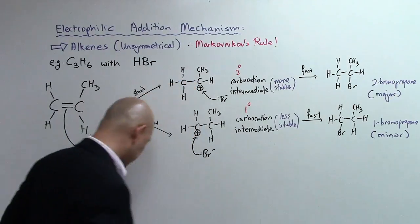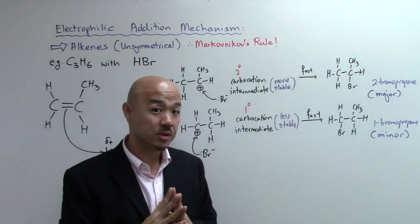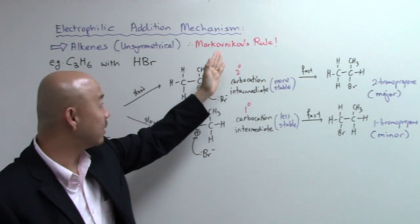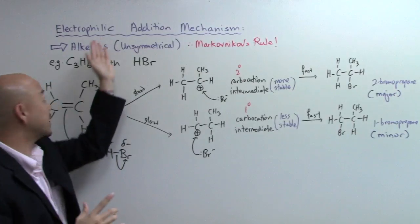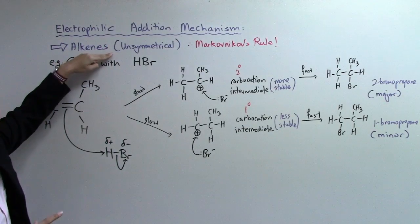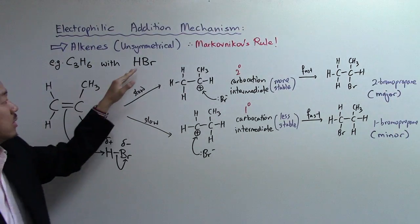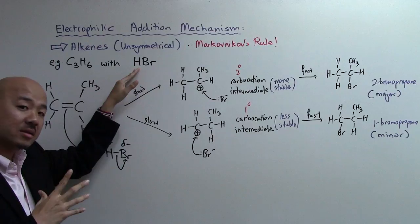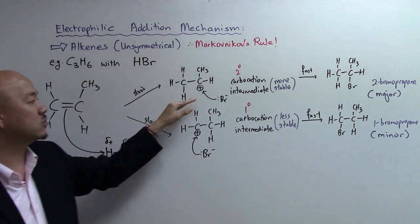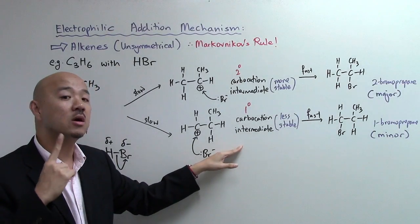So this will be your major product whereas this is your minor product. There will be two alkyl halides or haloalkanes being produced. Once again, Markovnikov's rule is very important when it comes to electrophilic addition of an unsymmetrical alkene like propene with a reagent that is also unsymmetrical.